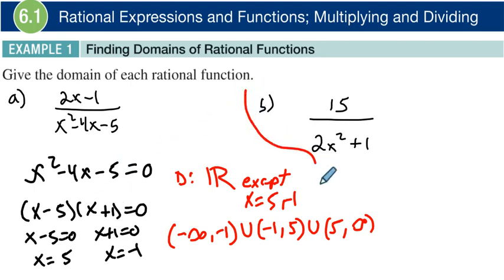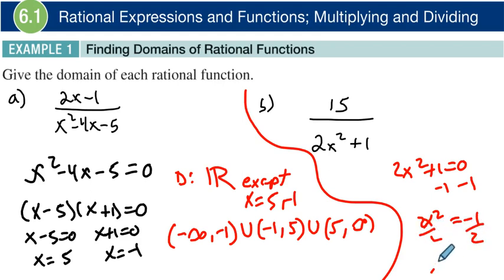Coming over here now to part B. Same thing, when is this going to be 0? Well, it's actually never, and I'll show you why. When is this 0? Well, if I subtract 1, 2x squared equals negative 1, and then if I divide both sides by 2, so I get x squared equals negative 1 half.